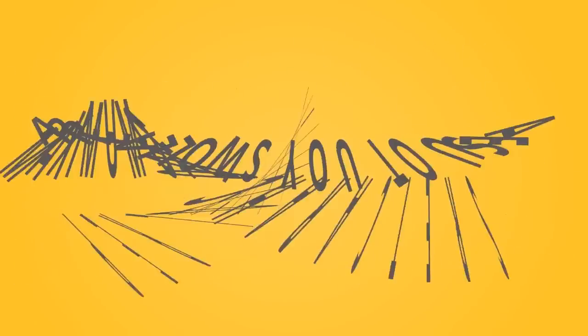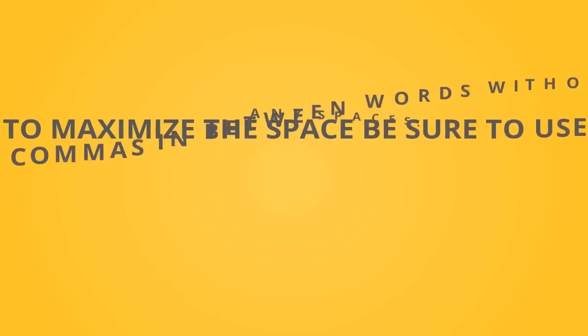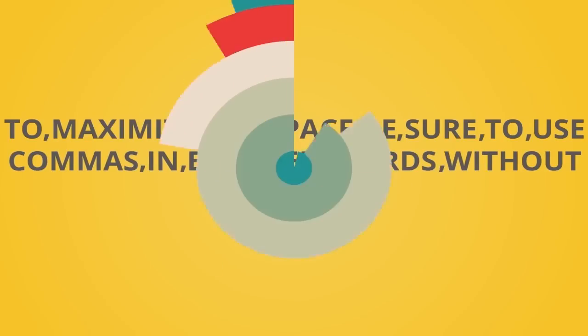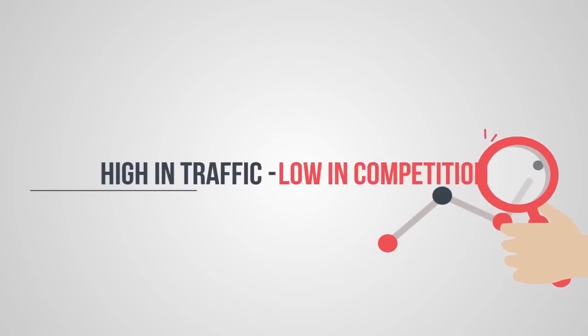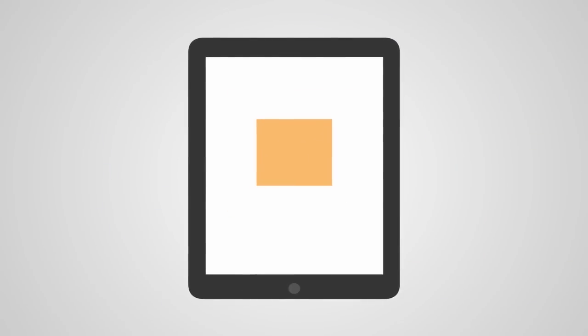Word of mouth is second, but we'll get into that later. Apple allows you to use a maximum of 100 characters per localization. To maximize the space, be sure to use commas in between words without any spaces. When finding keywords, look for words that are high in traffic, low in competition. With ASO, remember to think outside the box. Use synonyms, or other ways to say it that people might use.